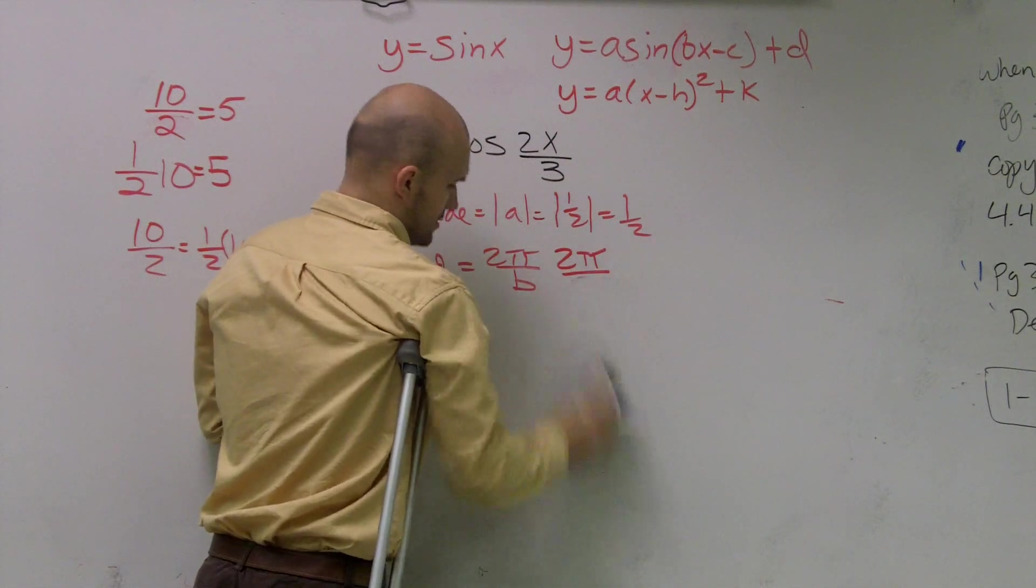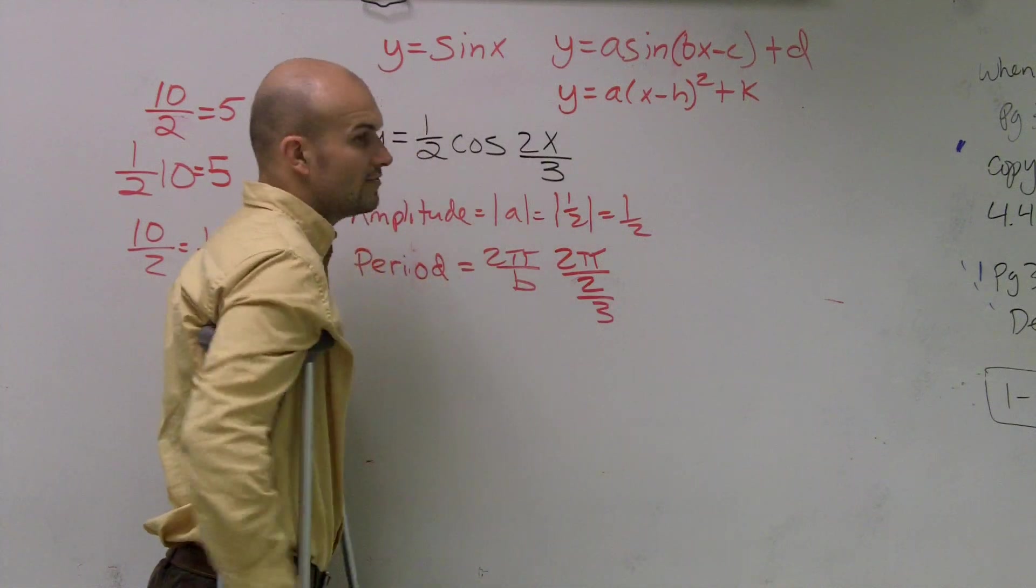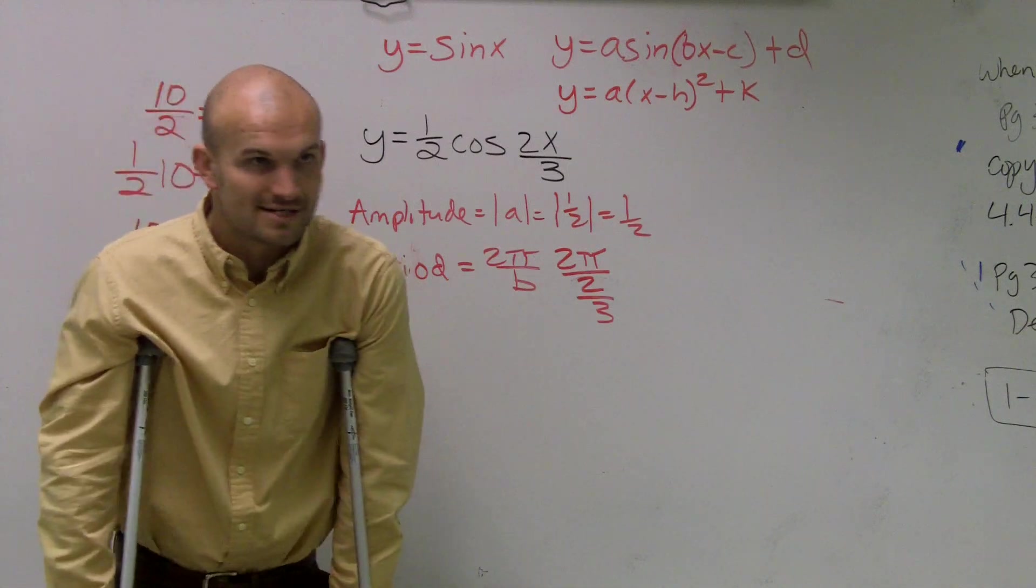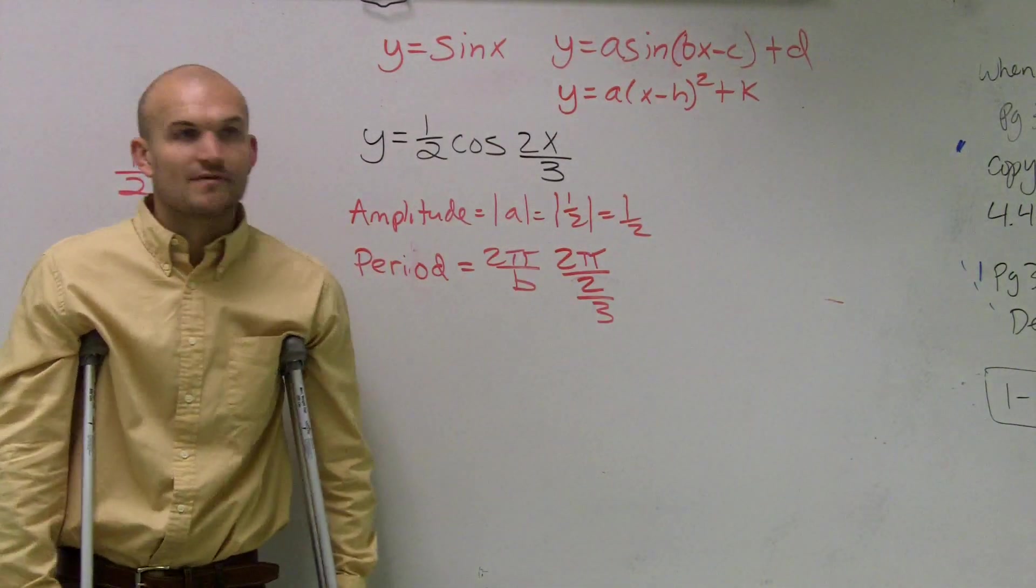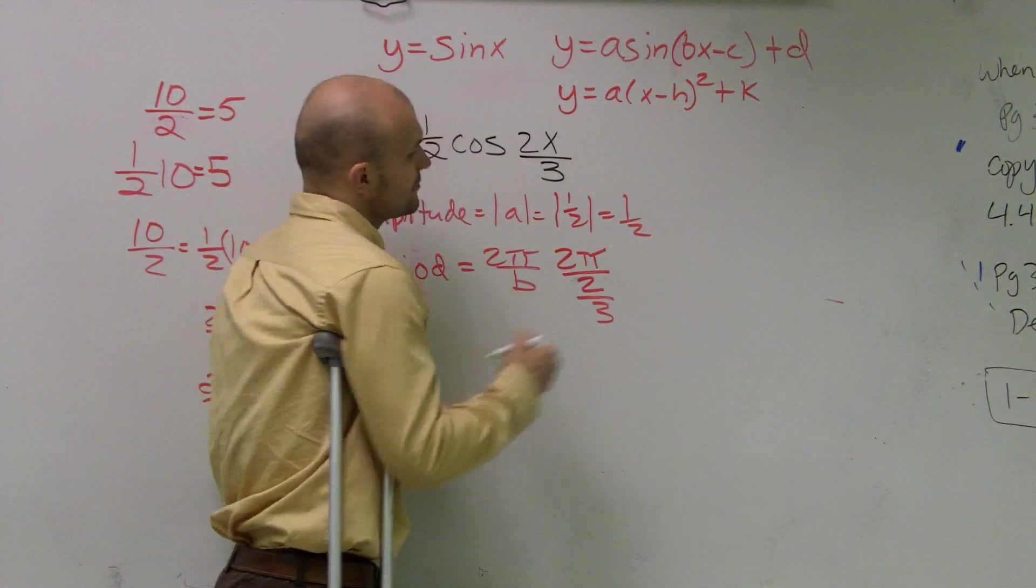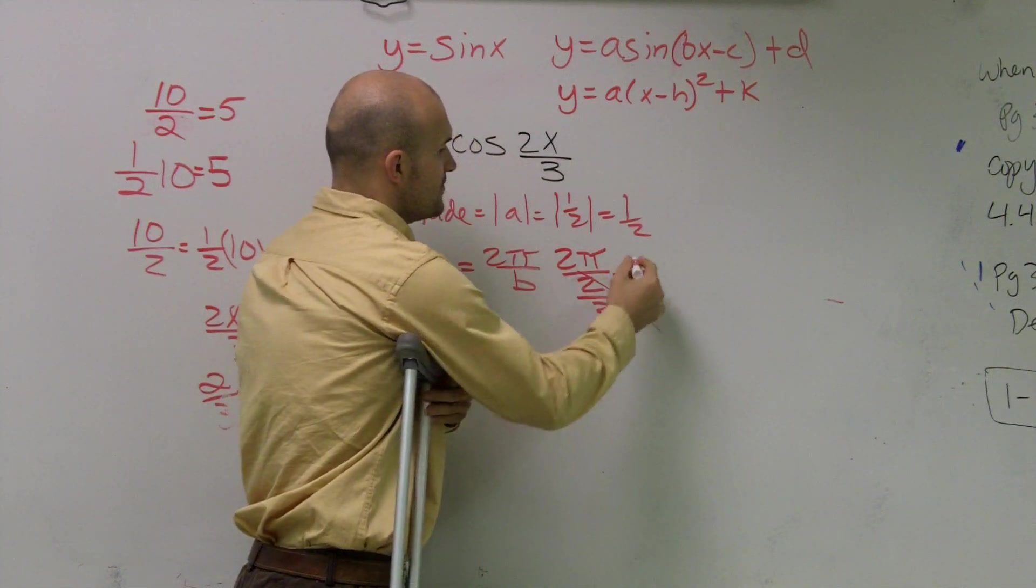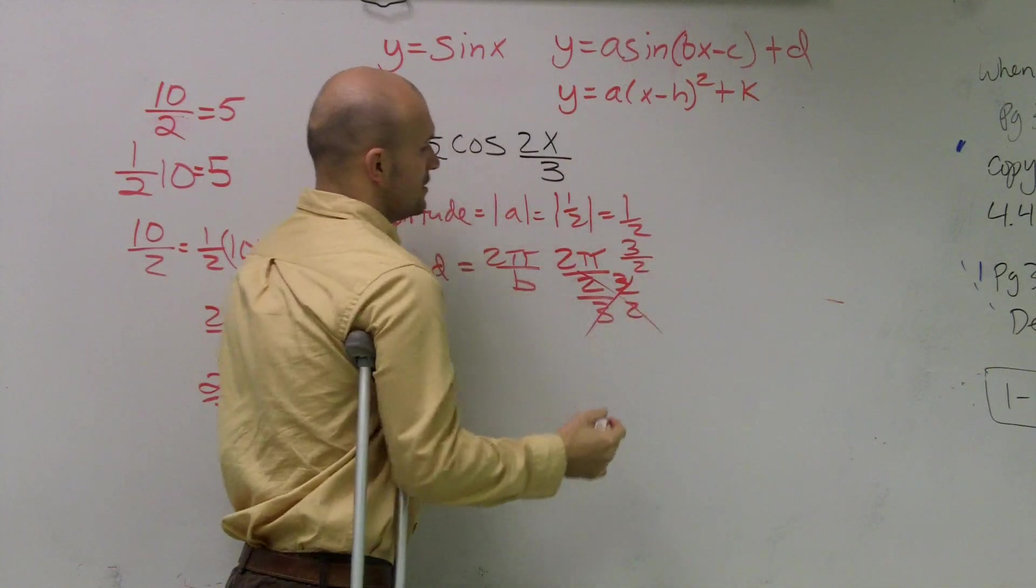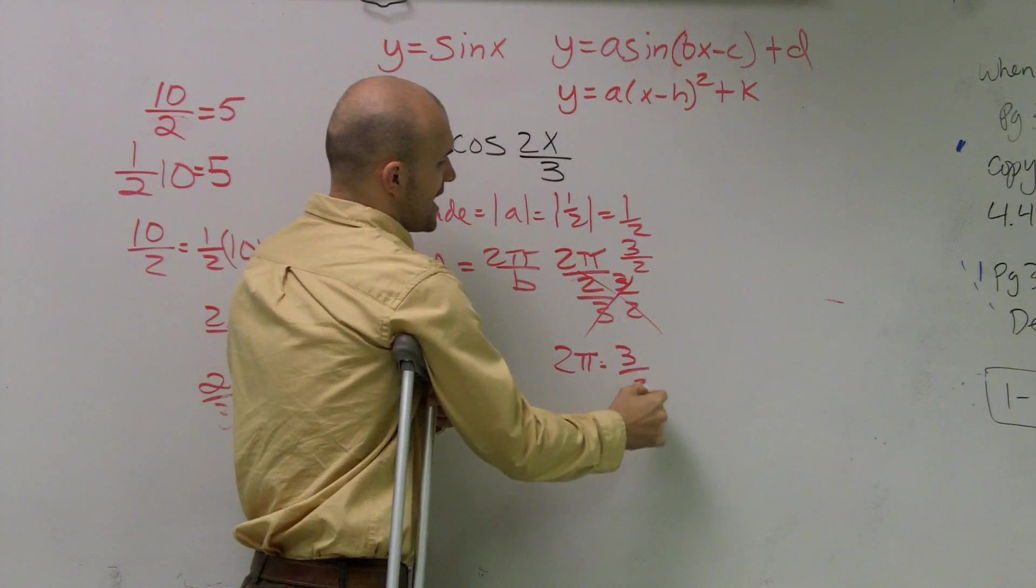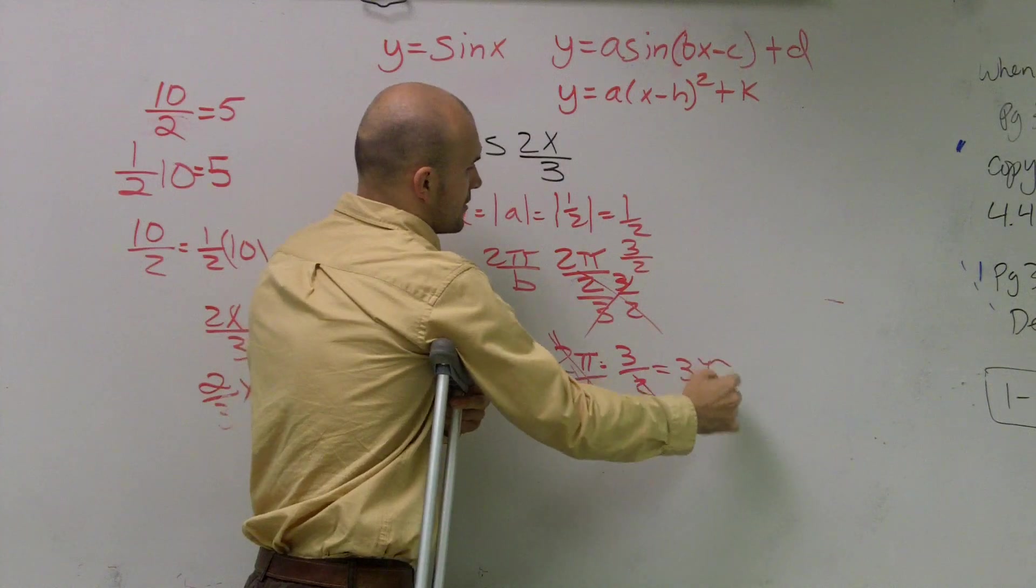2π divided by 2/3. Then, if you guys are not already sick about rationalizing the denominators and multiplying by the reciprocals, you notice, again, we have another fraction divided by another fraction. So again, we need to make sure we multiply by the reciprocal. That cancels out to 1, multiplied by the reciprocal. So therefore, I have 2π times 3/2 over 1. The 2s will cancel out, and I'm left with 3π.